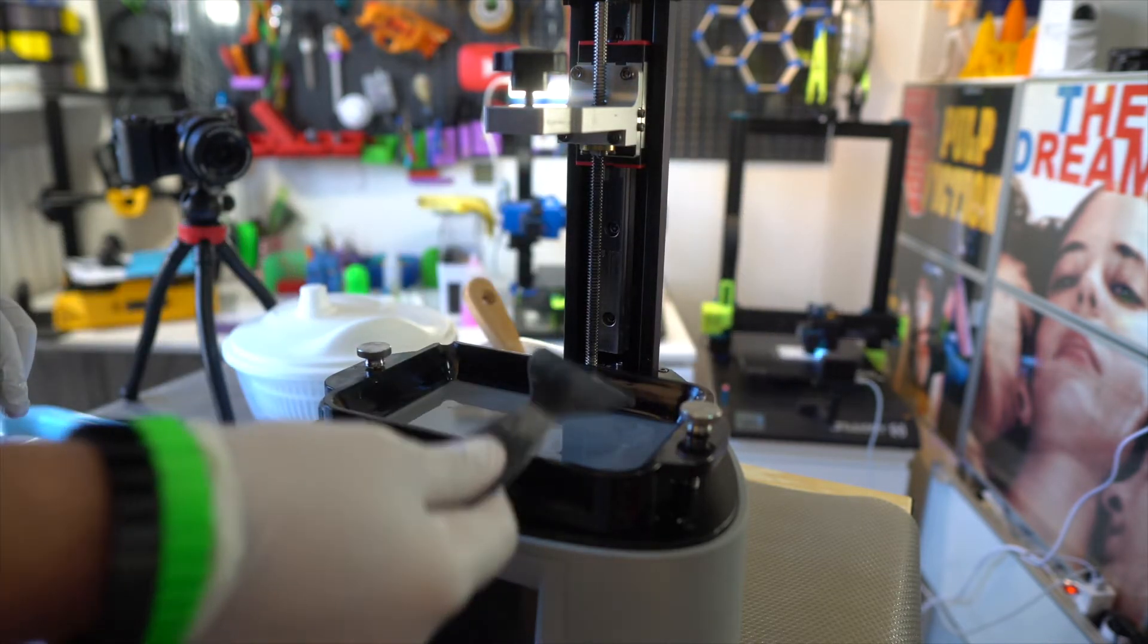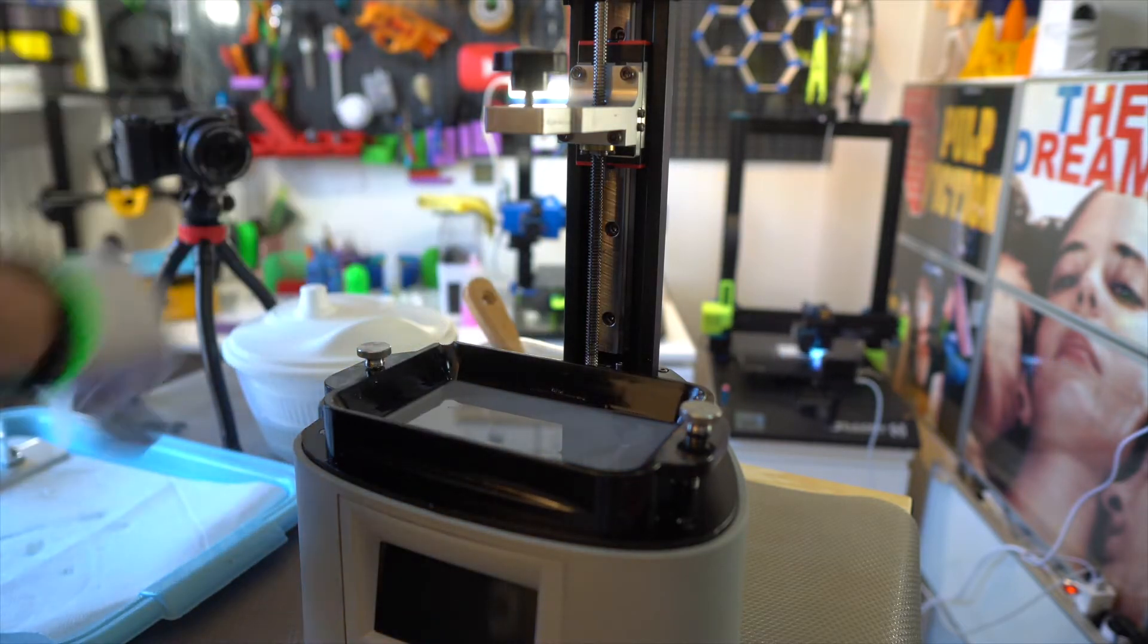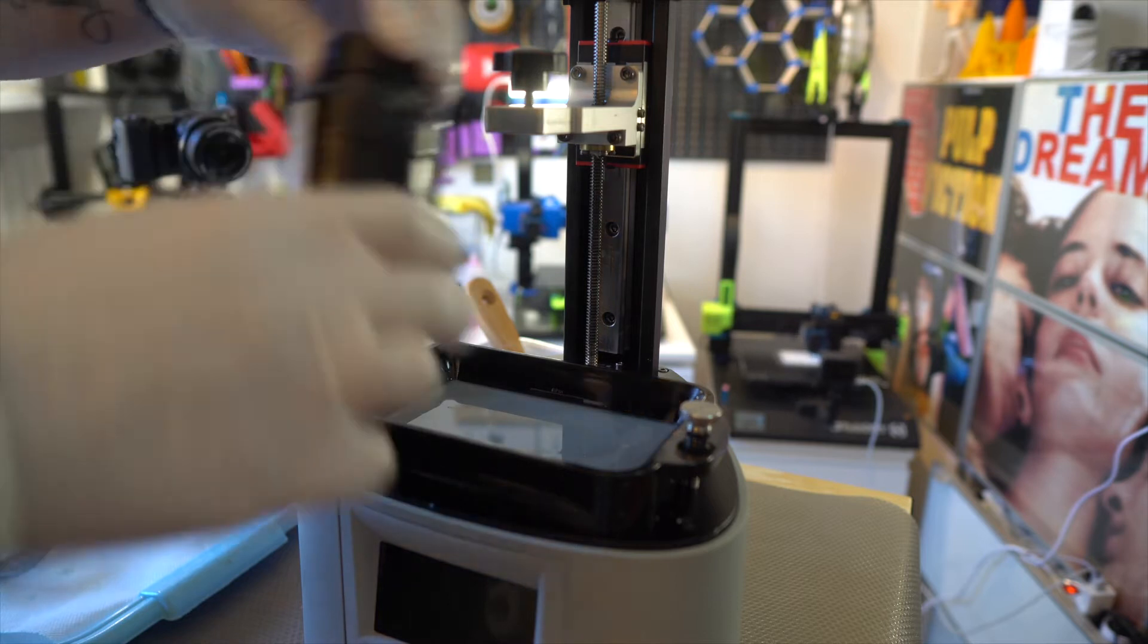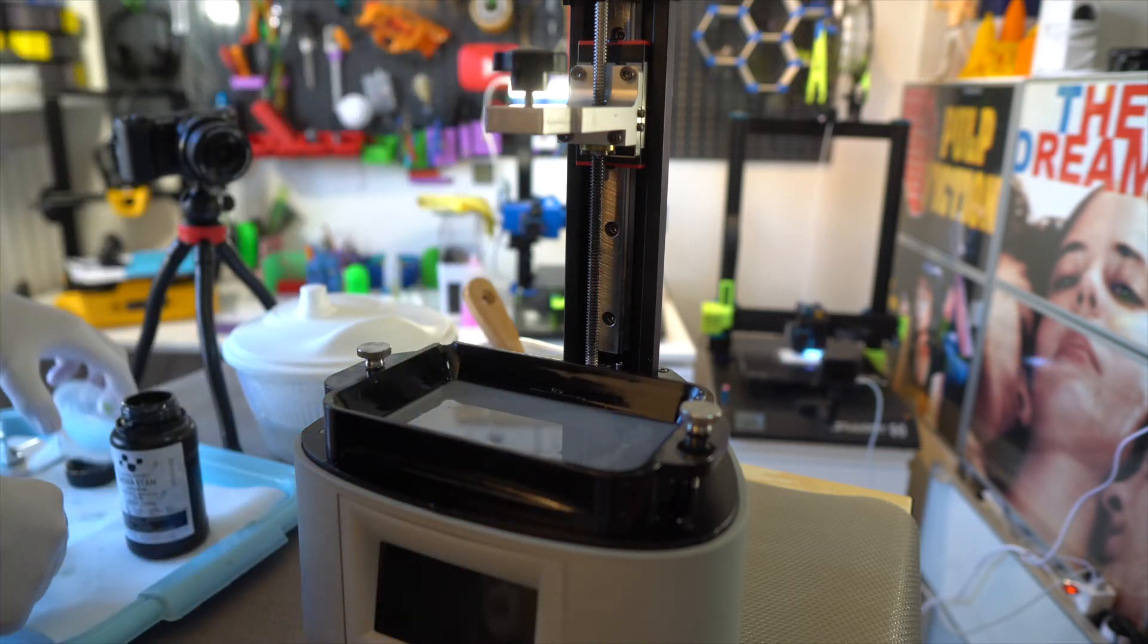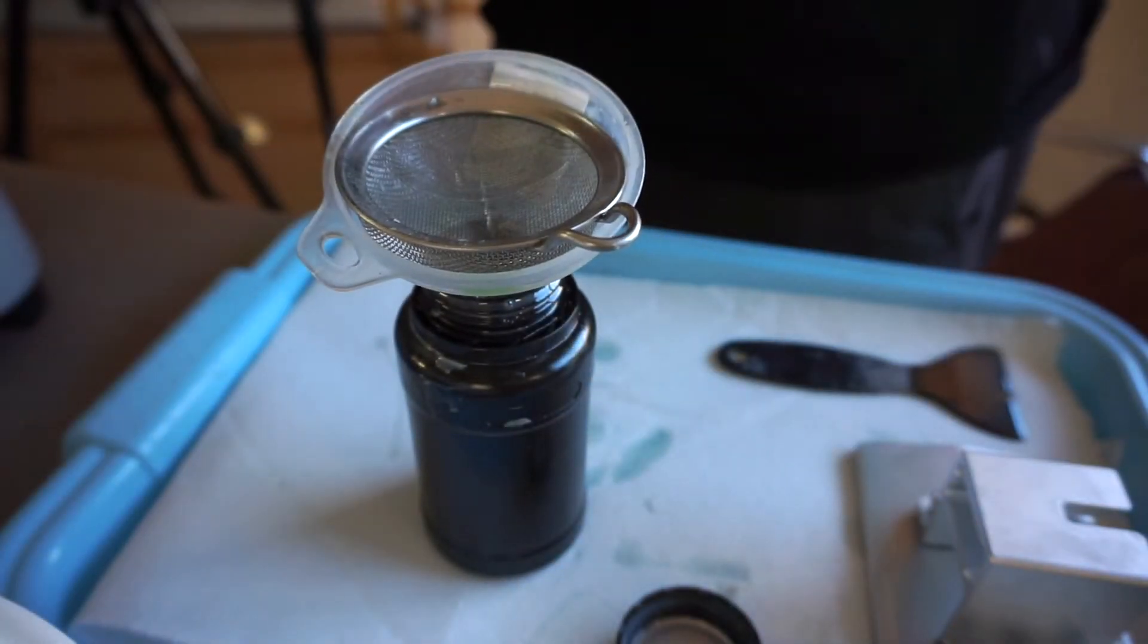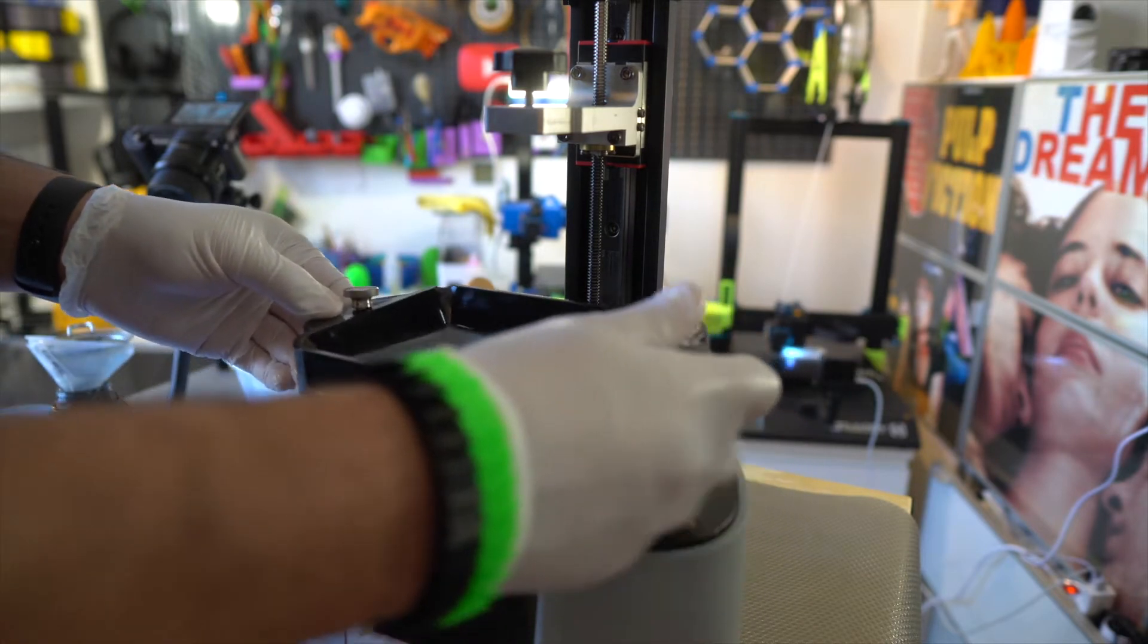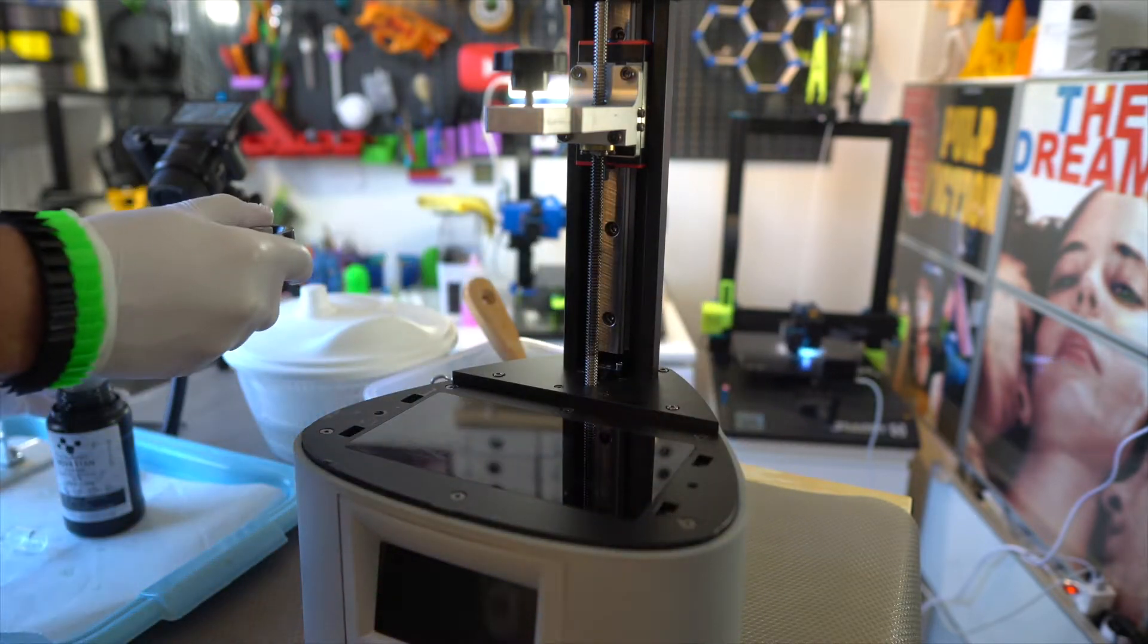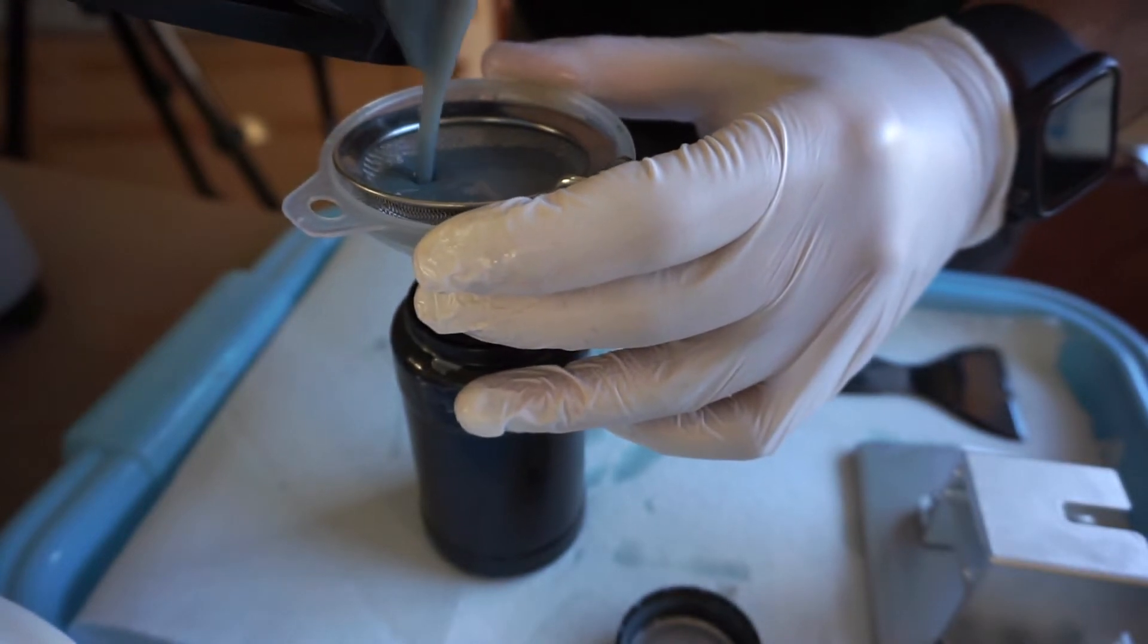So what we want to do is empty the tray, filter it, put it in a container. Do this, turn it off, and pour it.